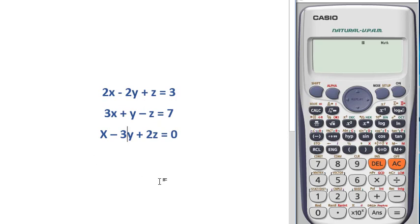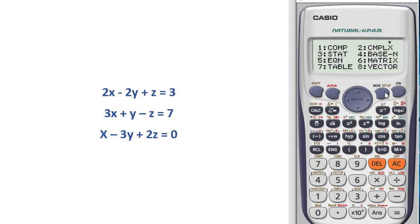First, you have to press mode and then to select equation or EQN, you have to press 5. As this is a three linear equation or equation with three variables, you have to press 2.